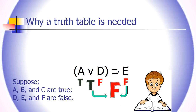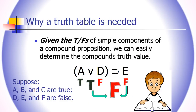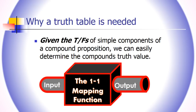Why do we need a truth table? Well, when I gave you the truth values of simple components, you were able to compute the truth value of the compound. It was actually very easy — if I tell you that A is true, D is false, and E is false, once you know the definitions of the wedge and horseshoe, you can easily compute for the whole. That's due to the one-to-one mapping function of our logical operators and how we define them truth functionally.